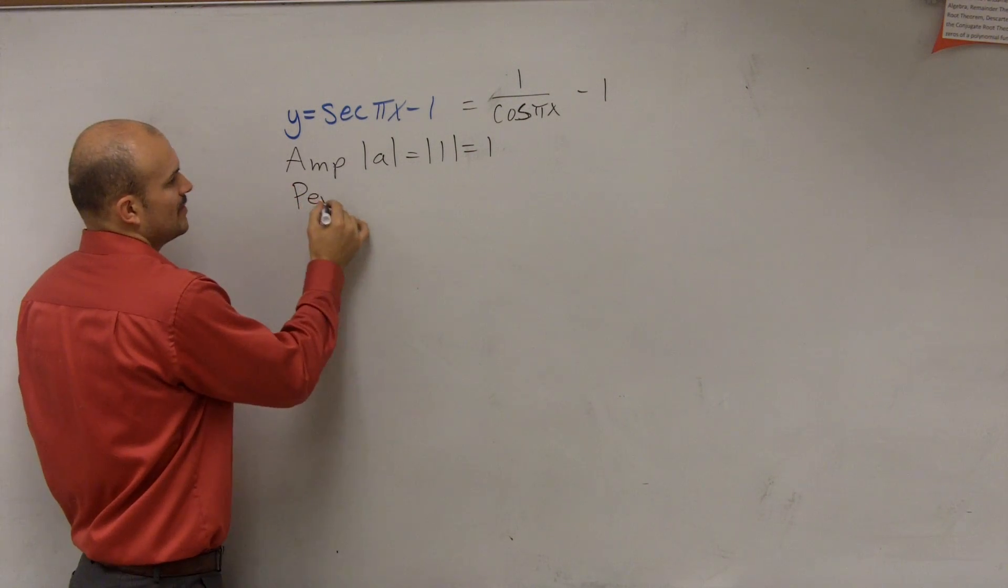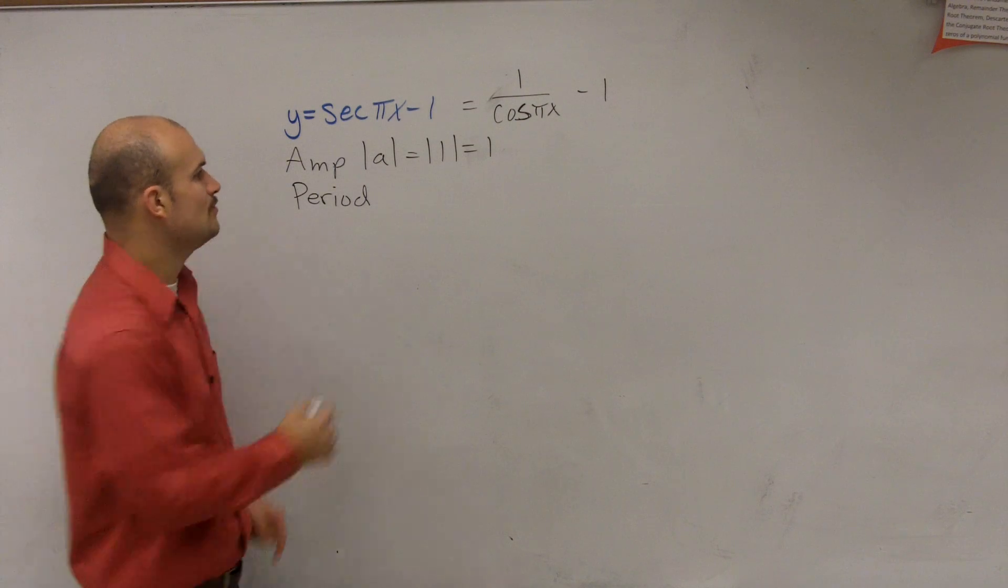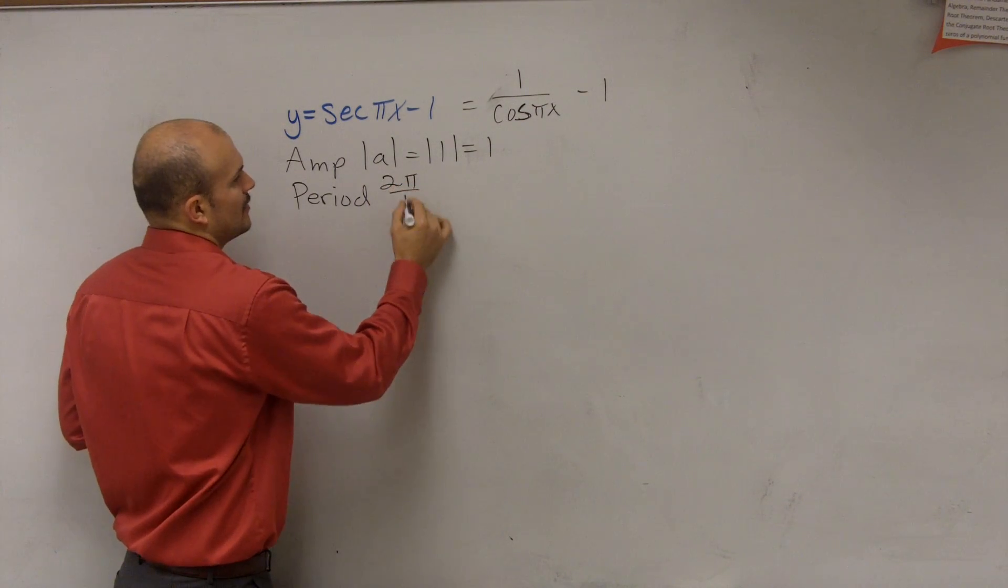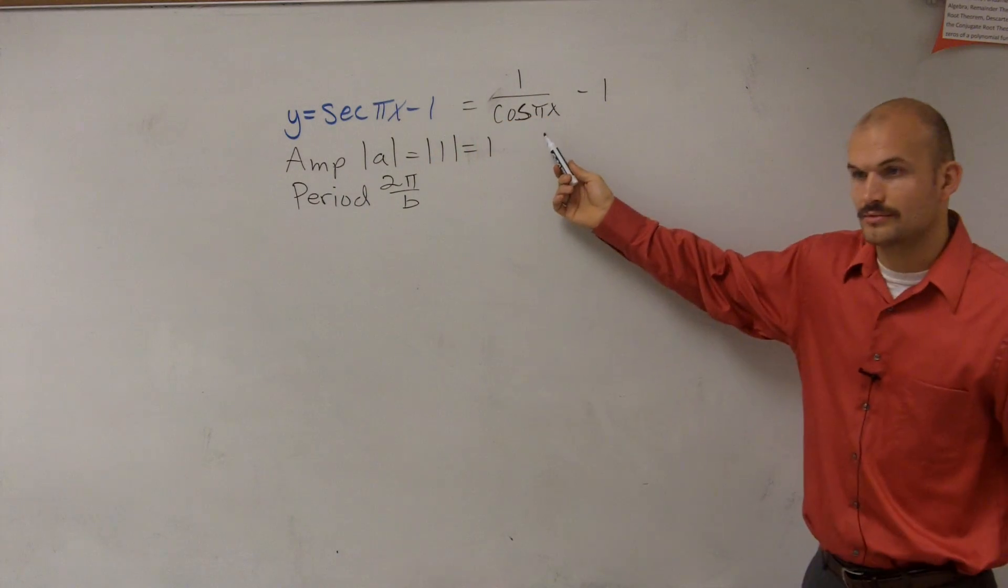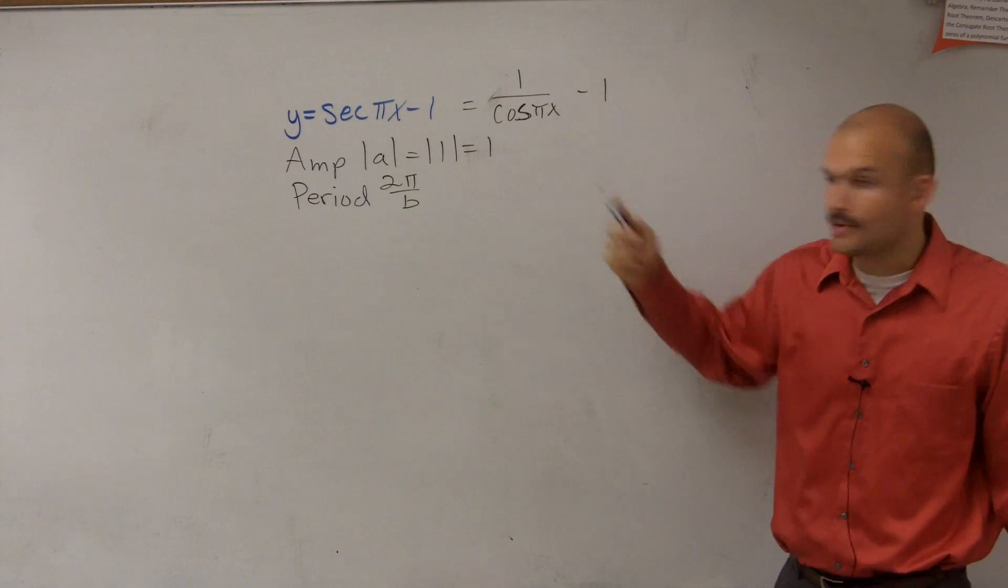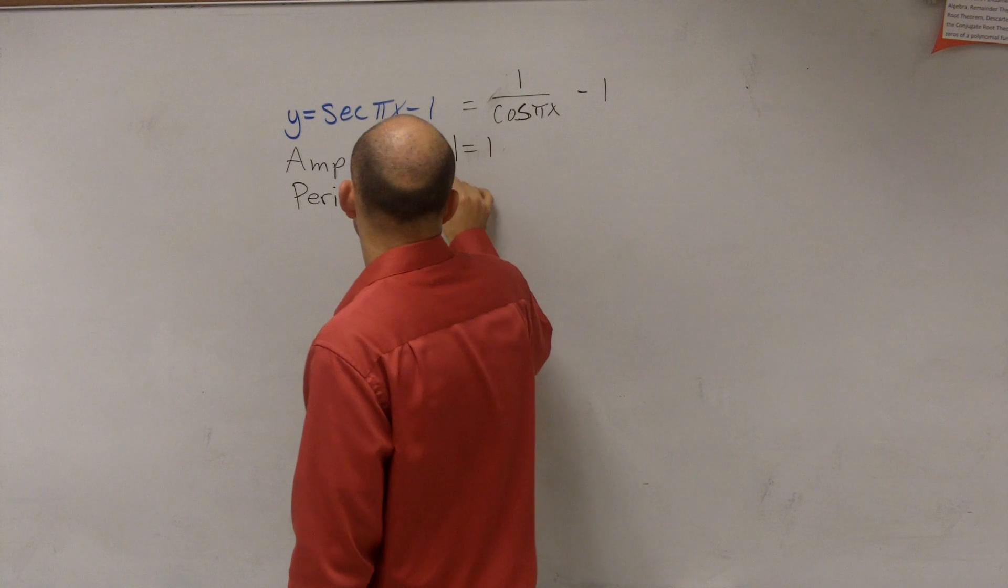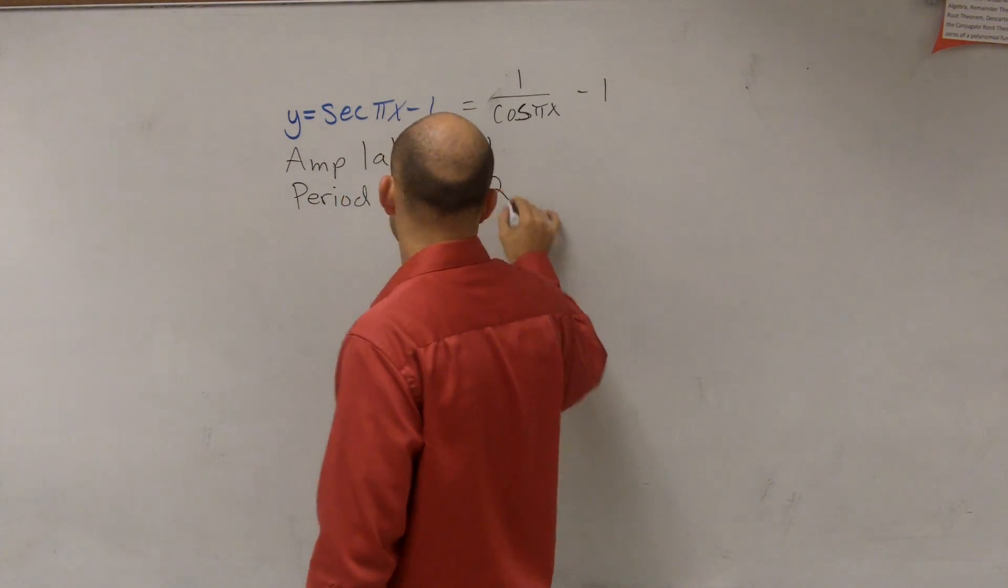Then we take a look at the period. Remember, the period is going to be 2 pi divided by b, where b is your coefficient of your variable. So our coefficient of our variable is pi. So we're going to have 2 pi divided by pi, which equals 2.